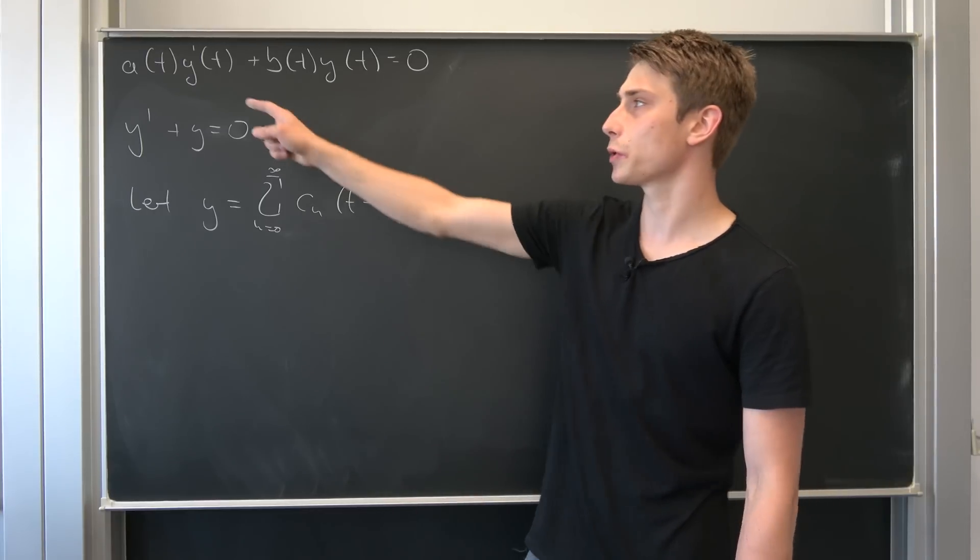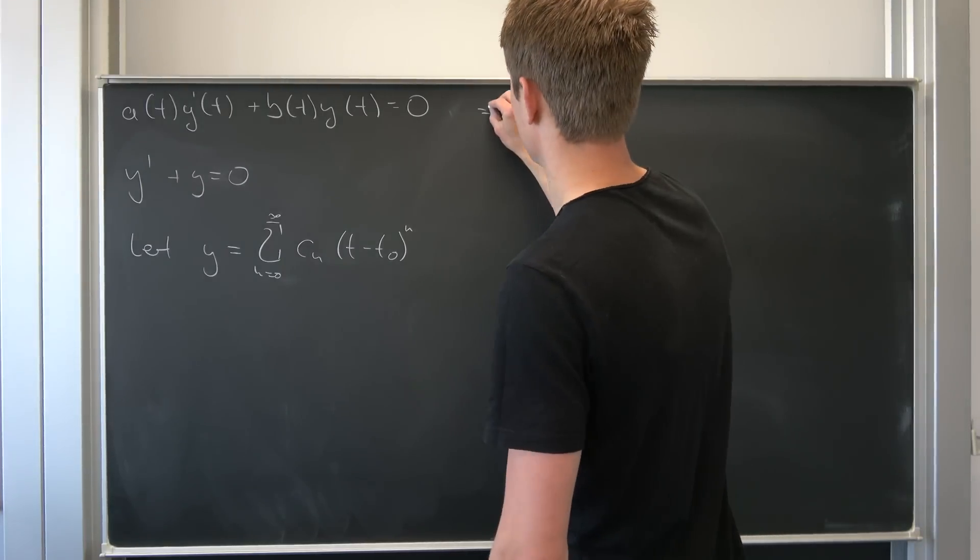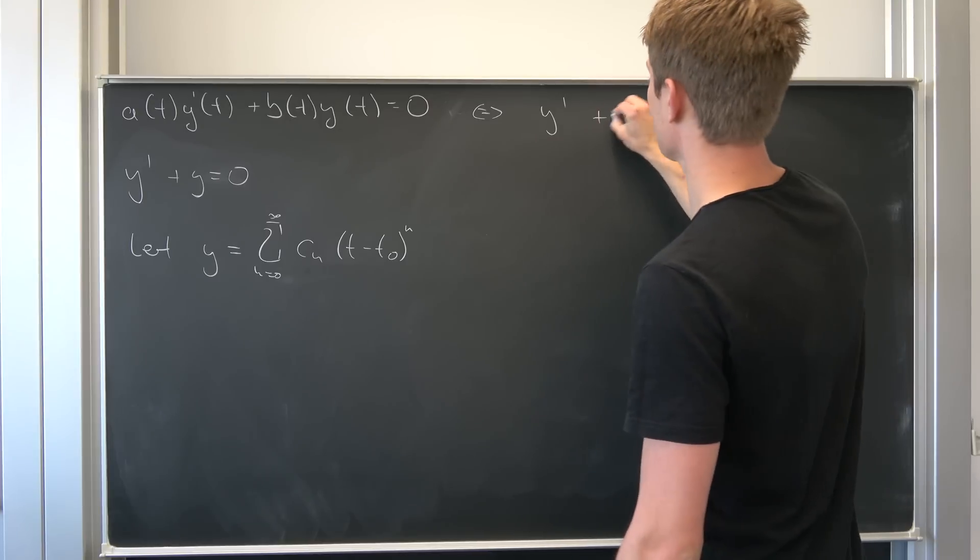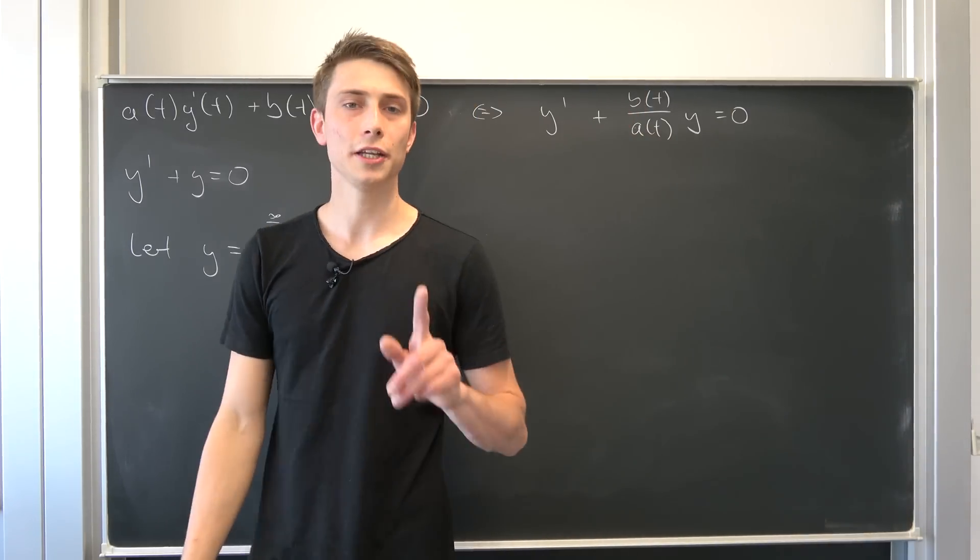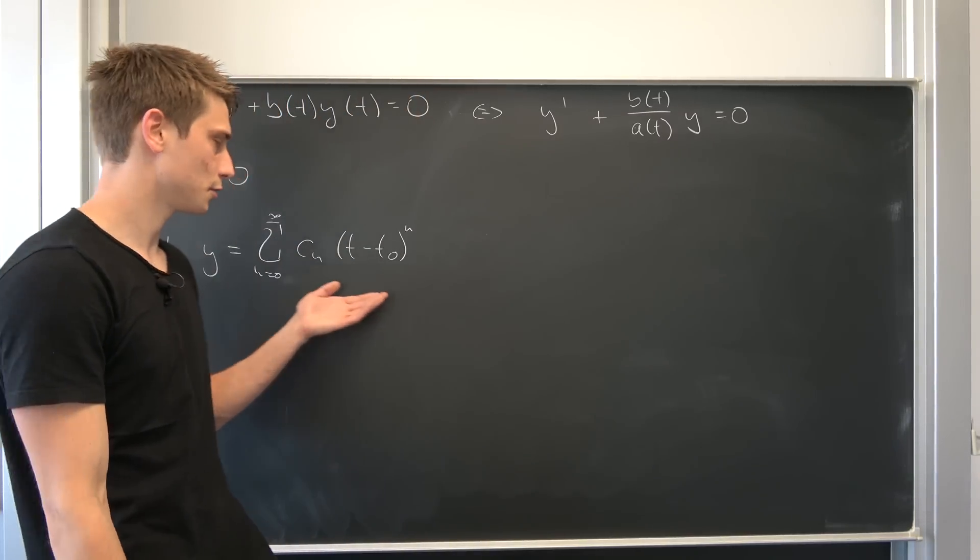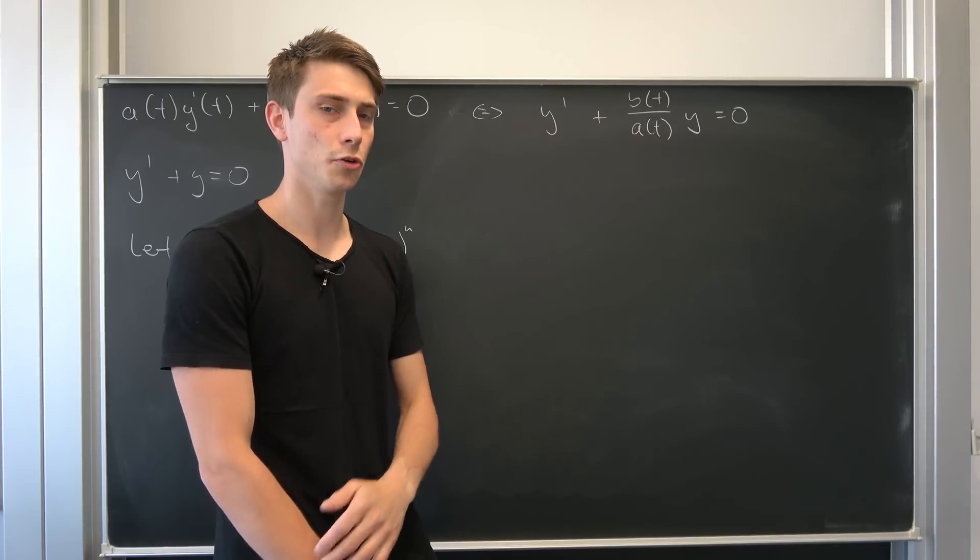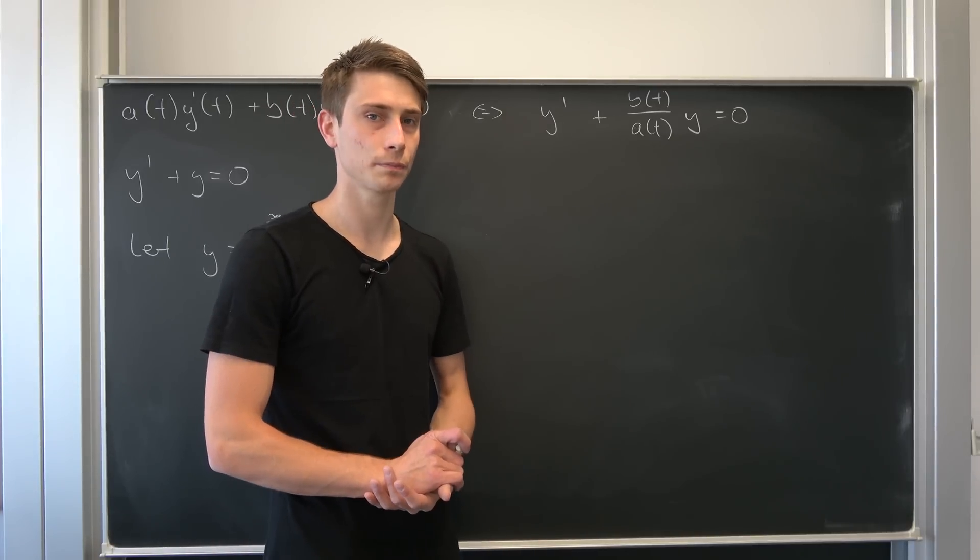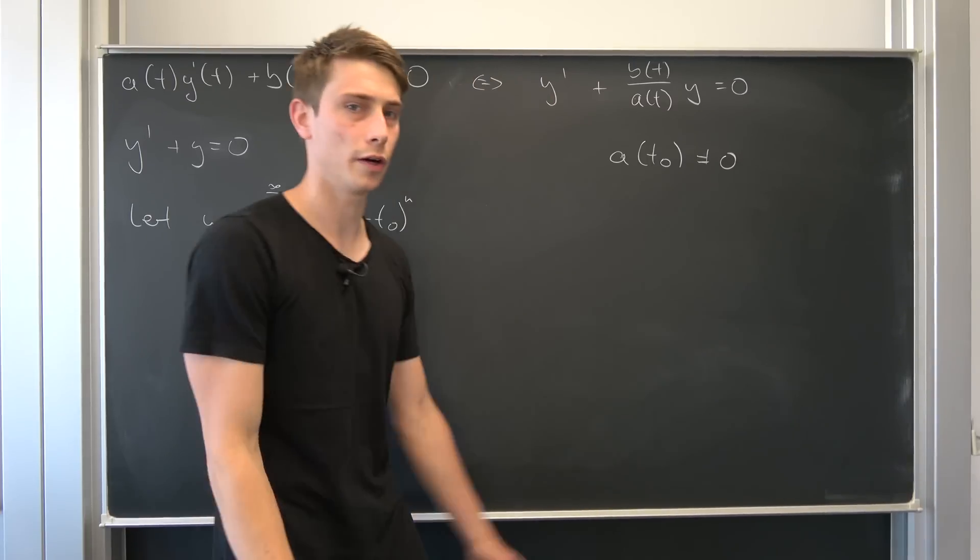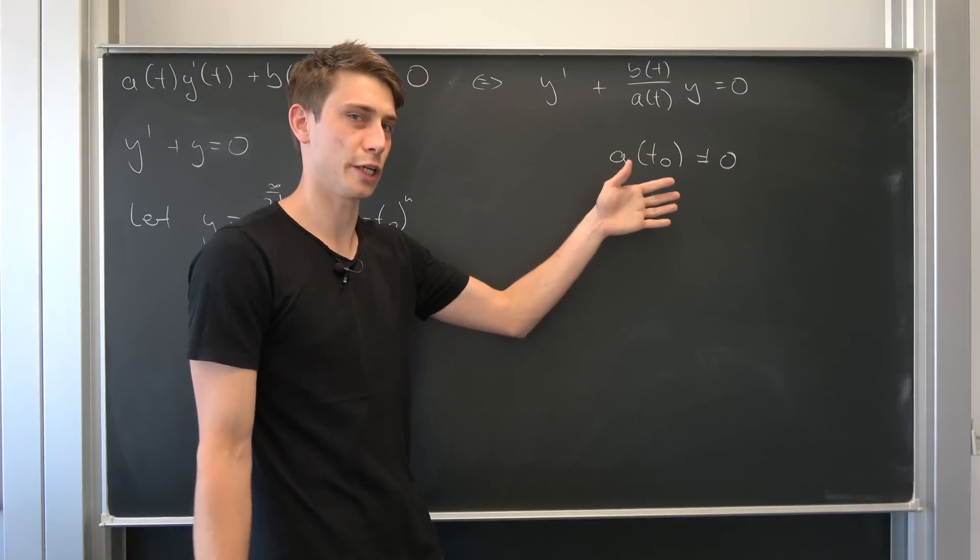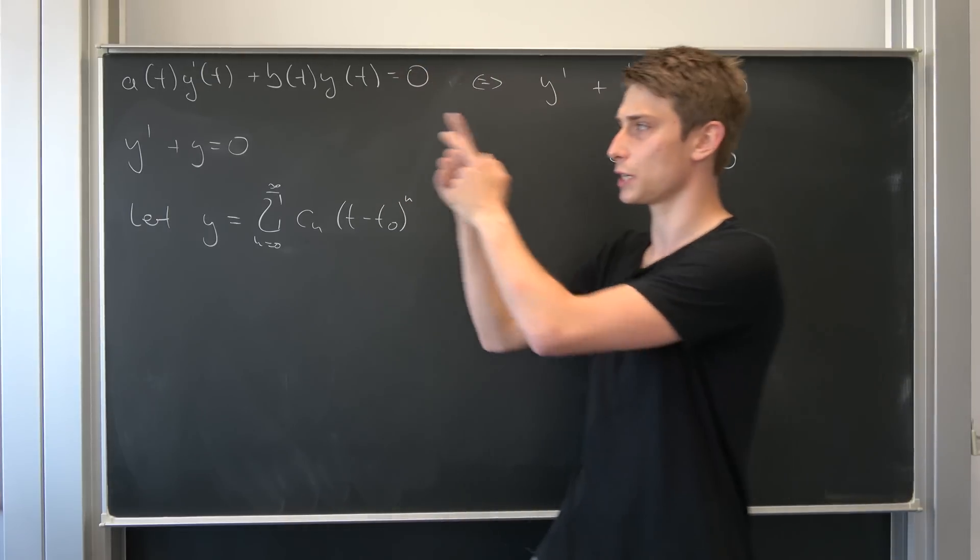This looks awfully a lot like Taylor series representations, but we don't know anything about those coefficients. We're going to find out in a few minutes what those are. But what are our t0s? For this we want to take a look at the original expression. We're going to assume that a(t) is indeed equal to 1. That especially means we can divide both sides by it. So we have y' plus b(t) over a(t) times y equals 0.